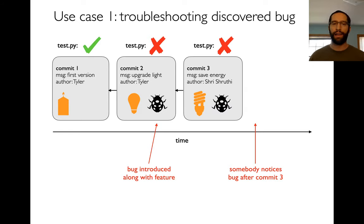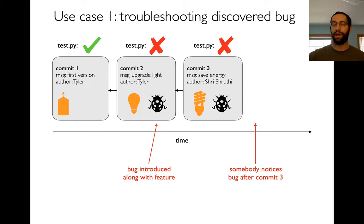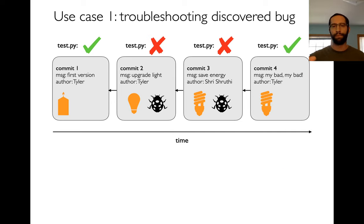Running the test on all versions, we'll see it worked fine in version one but the problem started in version two. So we blame version two — not to be mean, but to tell Tyler he's the one who should fix it since he introduced it. It also narrows things down: I didn't have the bug in commit one, I had it in commit two, so I can look at exactly what I changed there to quickly figure out how to fix it. This lets us debug more effectively, especially for tricky bugs that aren't discovered until a long time passes.